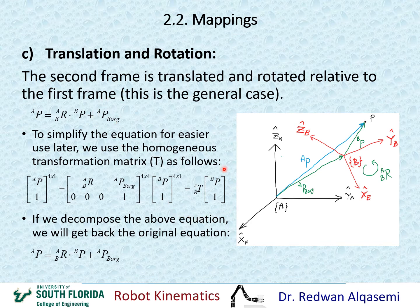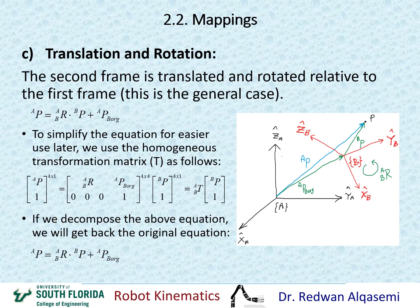So I can adopt this as a simpler way to find this kind of mapping when we have both translation and rotation. Just remember to add 1 to the vector so it becomes 4 by 1, and once done with the multiplication, only take the first three elements and disregard the 1 at the bottom of the vector.